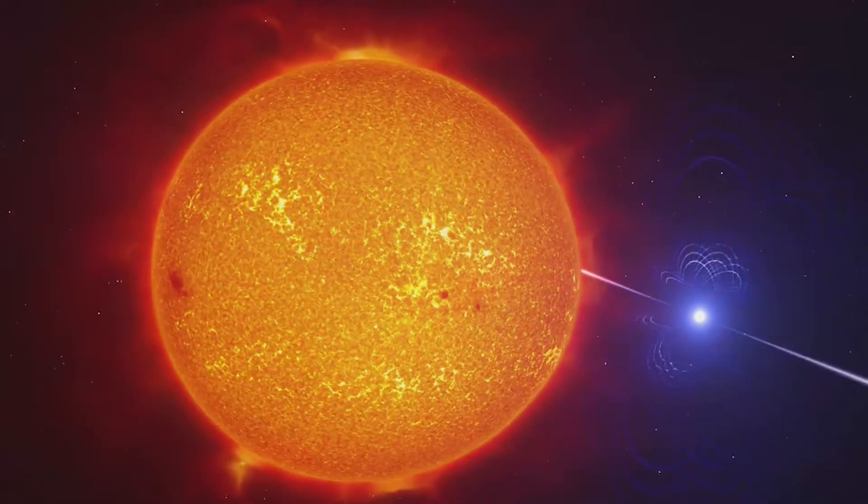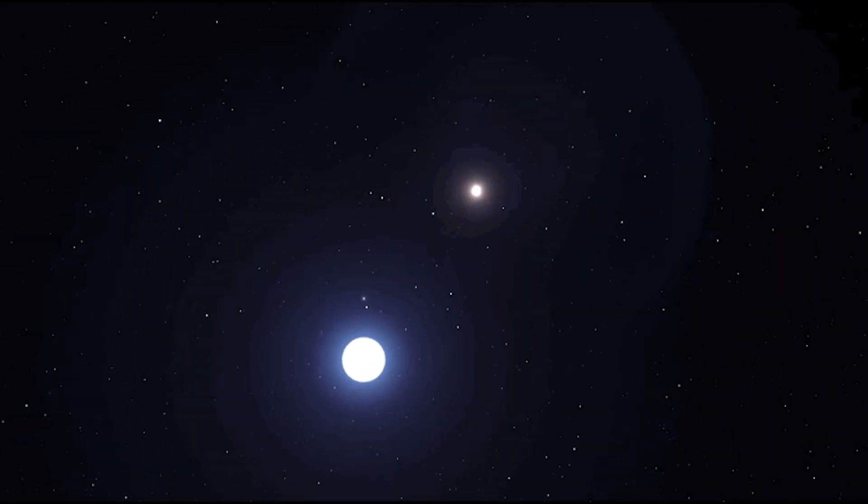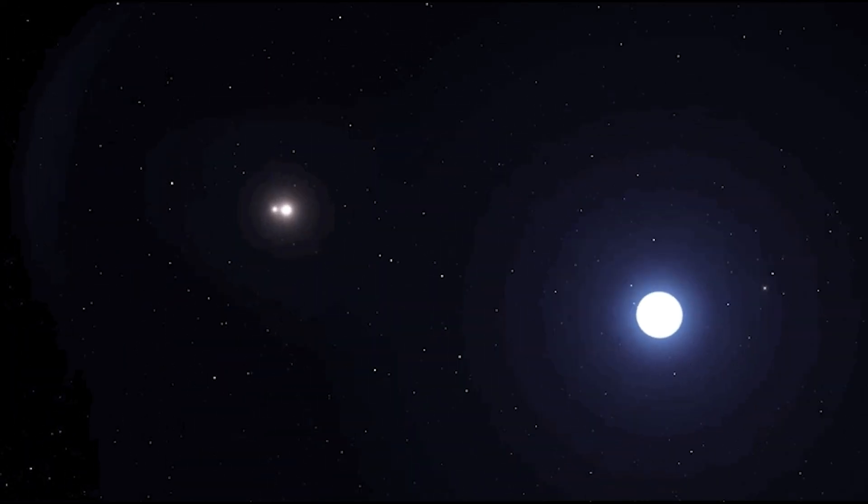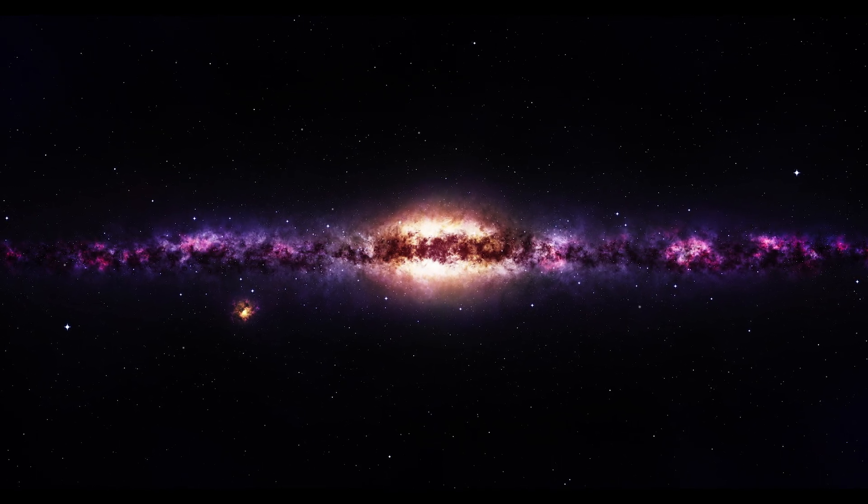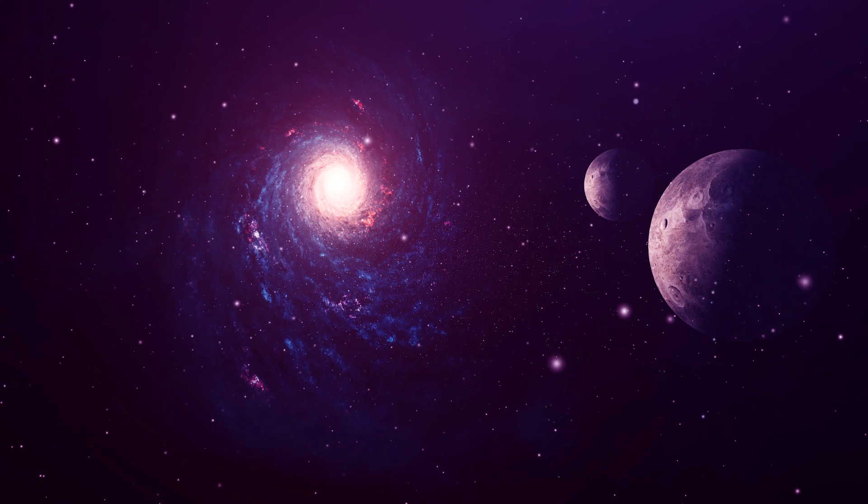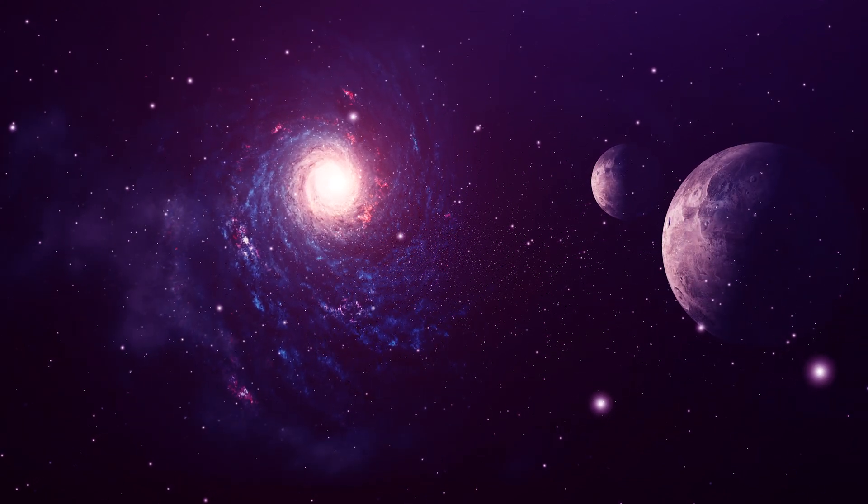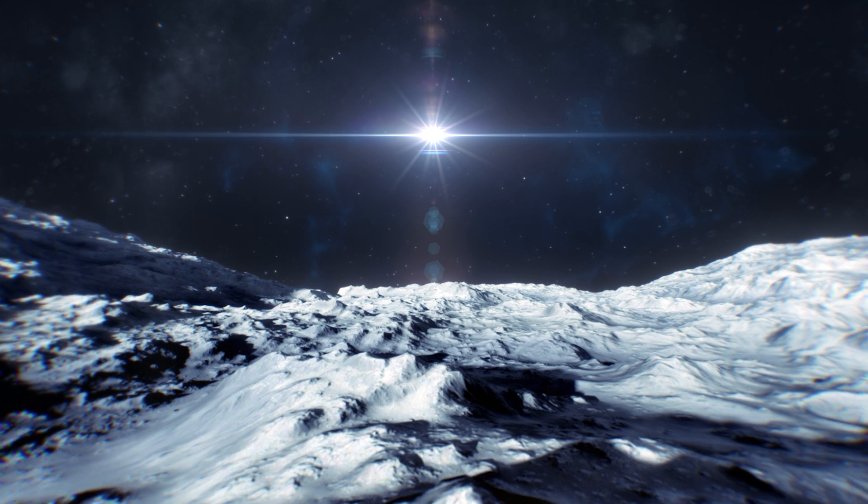This newly found pulsar with the tongue-twisting designation J1912-4410 pulses every 5.3 minutes and likewise consists of a white dwarf and a companion locked in a tight orbital embrace. Only two such systems have ever been seen, making white dwarf pulsars extraordinarily rare indeed. They are needles in the cosmic haystack, extreme, exotic, and exceedingly uncommon. But by finding them, scientists have opened a window into new physics. These stellar oddities teach us how white dwarfs can behave when pushed to their absolute limits, revealing nature's ability to reinvent even the dying embers of a star into something astonishing.